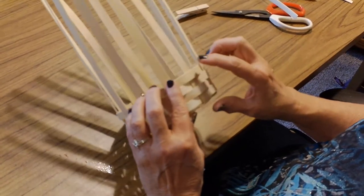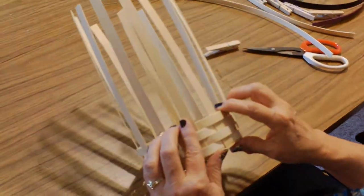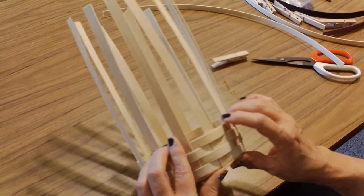For this basket I'm going to do some basic weaving with some wider reeds, and then I'm also going to do some twining. This will be in the next segment.